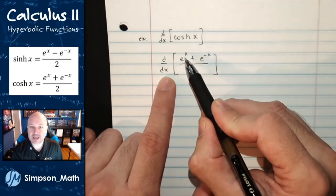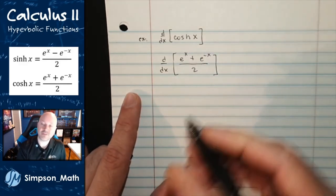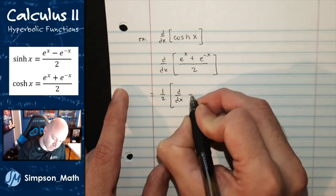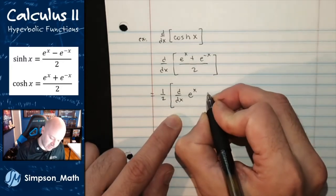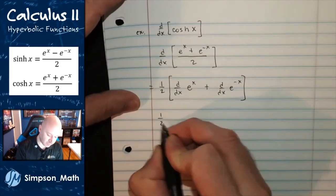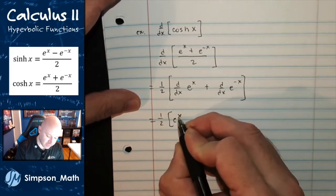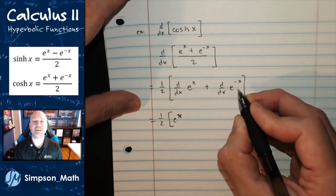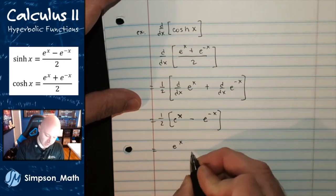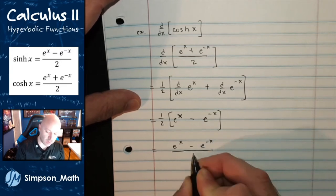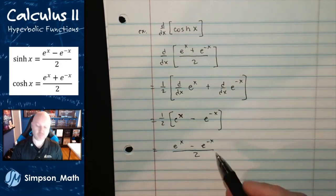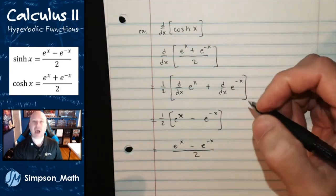I want to take the derivative of e to the x plus e to the negative x, all over 2 — that's how we define cosh. The one-half constant can be pulled out of the derivative process. Derivatives are linear, so I can split this into two separate derivatives: one-half times the derivative of e to the x plus the derivative of e to the negative x. The derivative of e to the x is e to the x, and the derivative of e to the negative x is negative e to the negative x. So the final answer is e to the x minus e to the negative x, all over 2 — which is hyperbolic sine. The derivative of cosh is a positive hyperbolic sine.